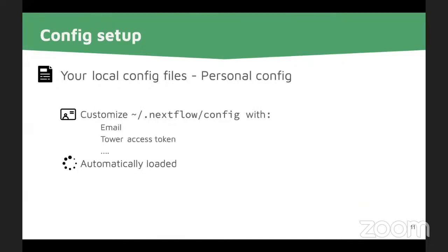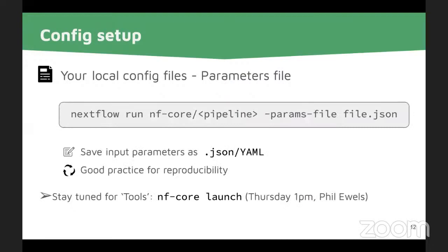There's also a personal config. In your home directory there's a `.nextflow` folder with a config where you can set your email address or your Nextflow Tower access token. This will be loaded every time you execute a pipeline, so you get an email notification, for example. You can also specify all your parameters on the command line using `--input`, `--output`, or specific pipeline parameters. Alternatively, you can save them all into one JSON or YAML file — great for rerunning your pipeline later, since you can store this file with your results and know exactly which parameters you used.